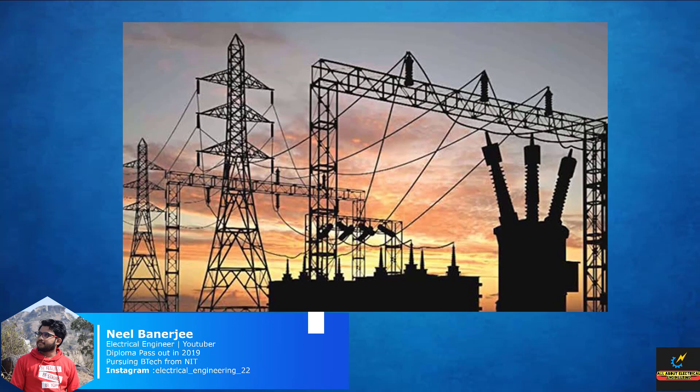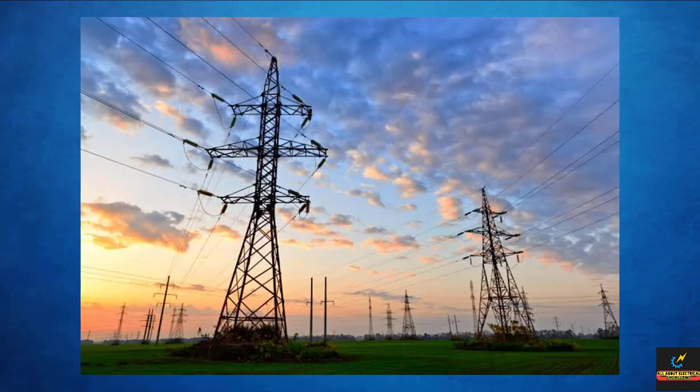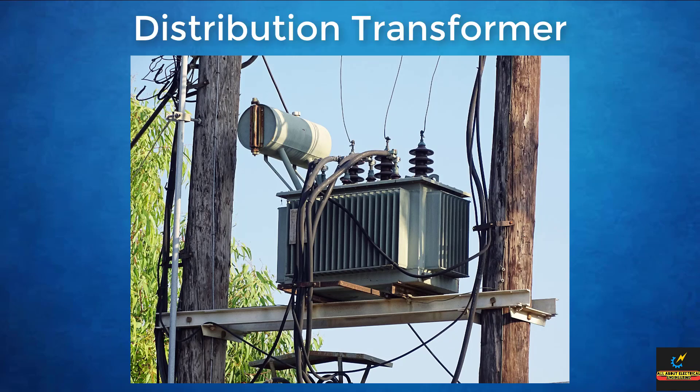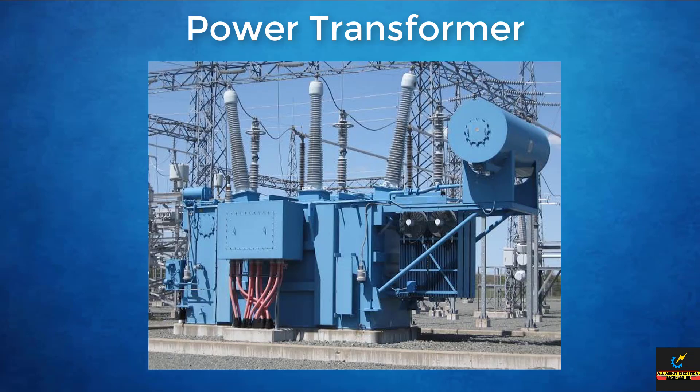Electric power is generated, transmitted and distributed in the form of alternating current or AC current. The transformer has no moving parts so it is very rugged and durable in construction. Also, the efficiency of the transformer is very high, as high as 99%.